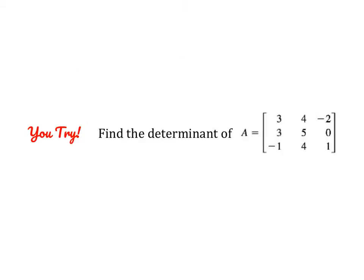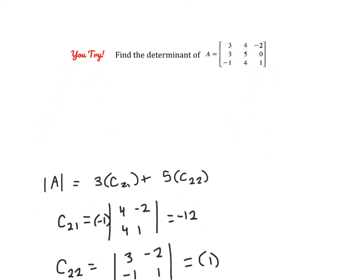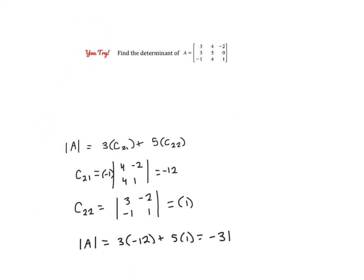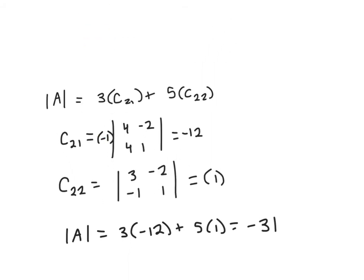Go ahead and pause the video and try to find the determinant of this matrix using the cofactor formula. I chose to use the second row: 3 times the cofactor of (2,1) plus 5 times the cofactor of (2,2). For the cofactor of (2,1), don't forget to multiply by negative 1 since the sum is odd. Take the determinant of the remaining matrix and multiply by negative 1. The cofactor of (2,2) should be positive 1. Substituting those values in, you should get negative 31.